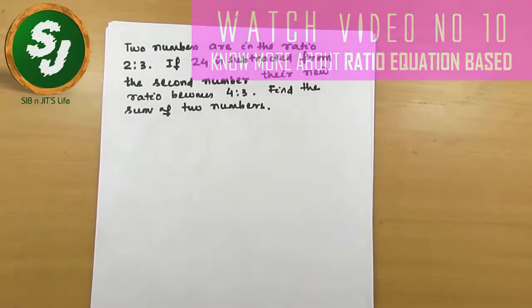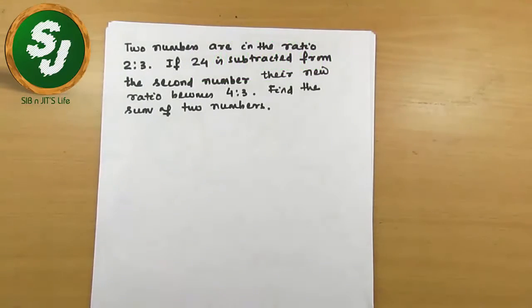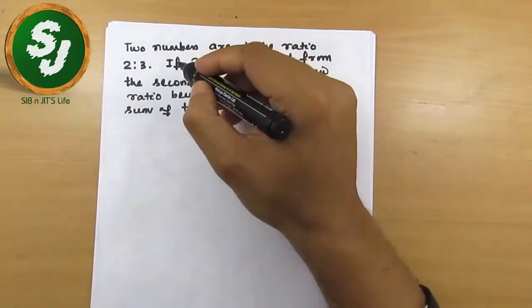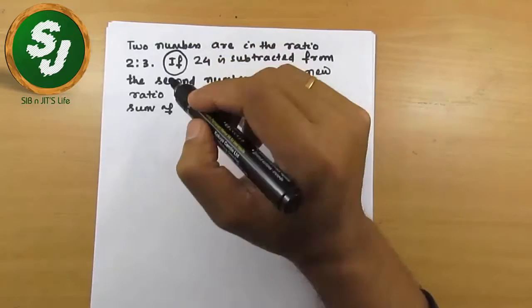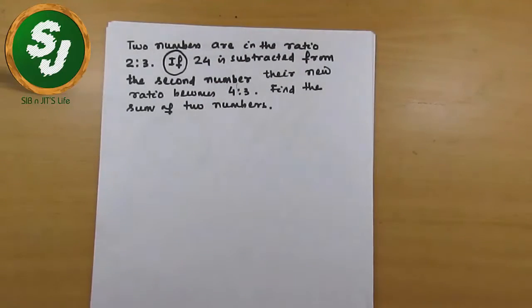is to 3. Find the sum of two numbers. In this type of question, there is an 'if' statement - if something is subtracted or if something is added, the new ratio becomes this. If 12 is added to something, this